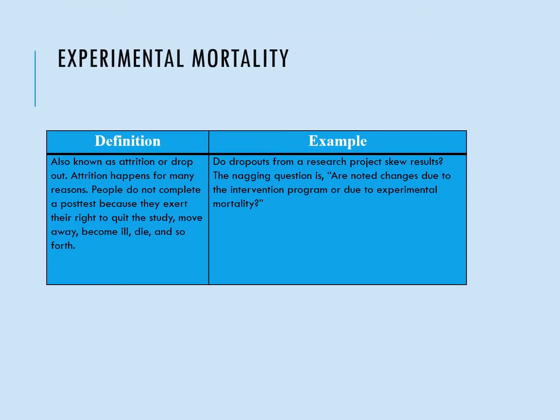The next one is experimental mortality, also known as attrition or dropout rate. It happens for a variety of reasons, but people drop or quit their participation in a study. We want to look at whether the research project skews results because of dropouts. Are changes in the dependent variable due to the program we're running, or the fact that enough people dropped out to skew or invalidate the results?